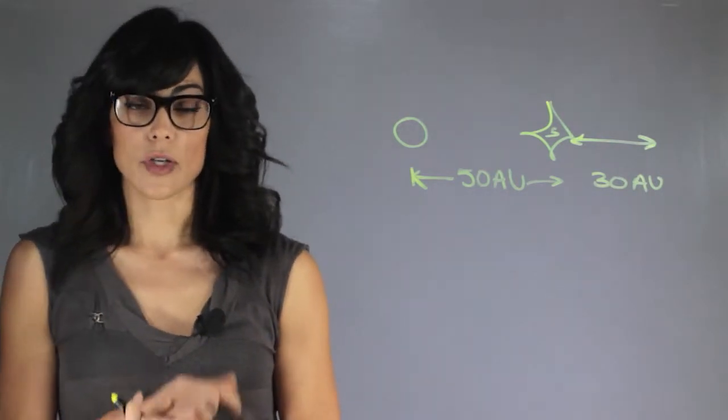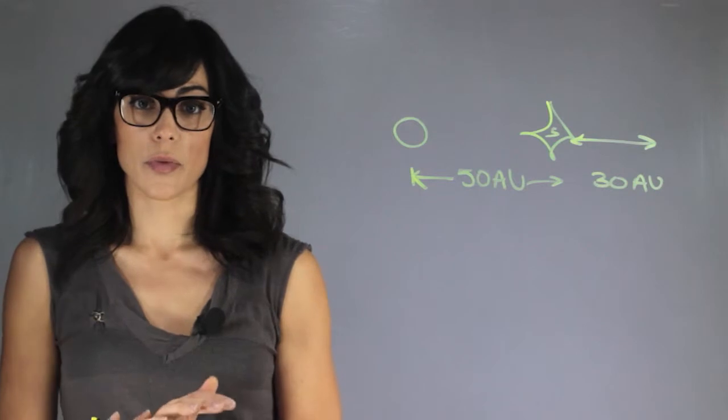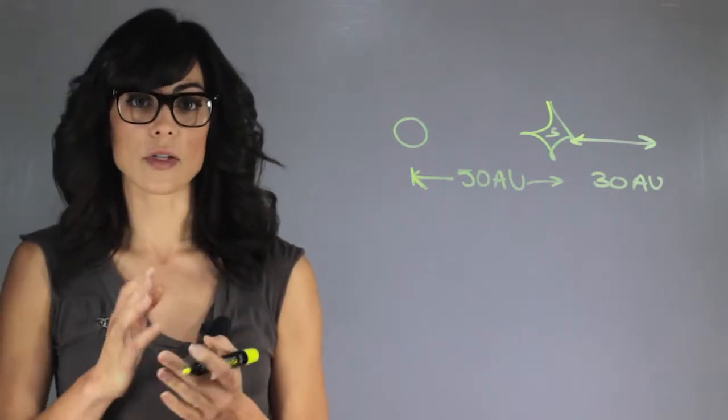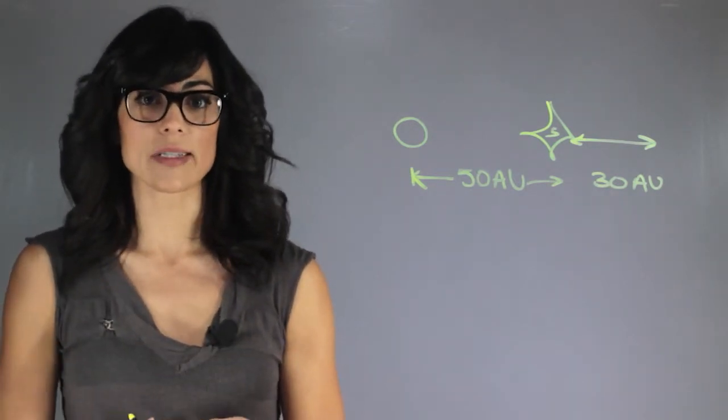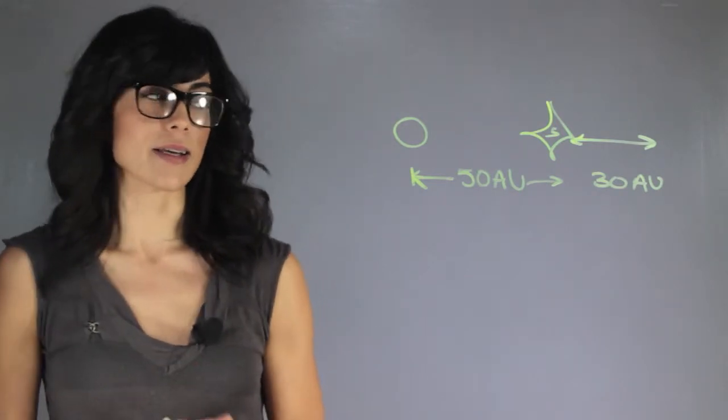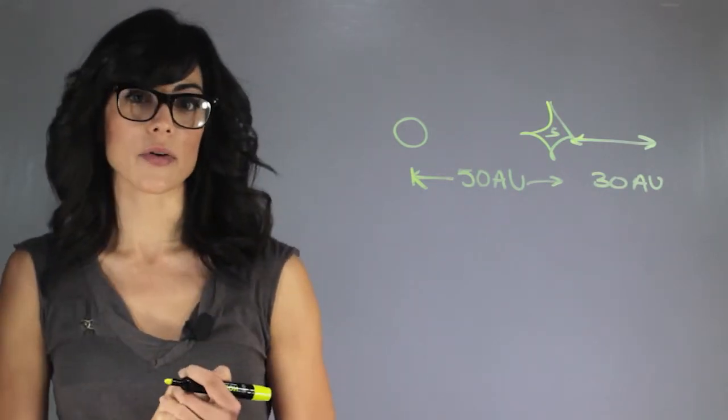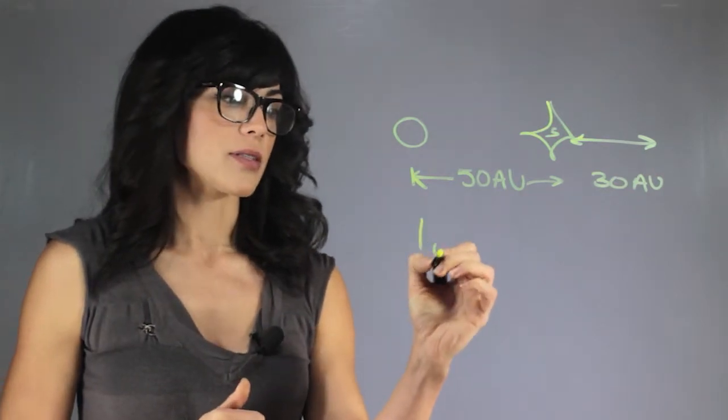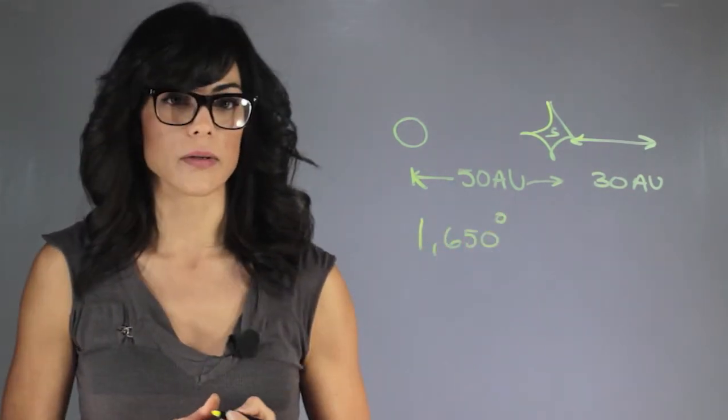The composition of Pluto is mostly rock and ice. It's about 50 to 70 percent rock, and the rest of it is ice. So it is a very cold place, and by cold I mean the inner core is 1,650 degrees below zero.